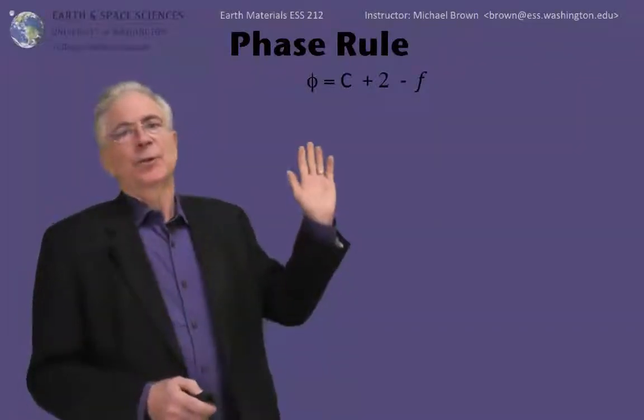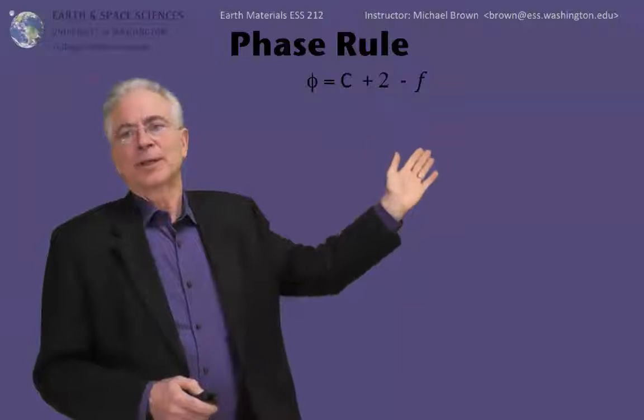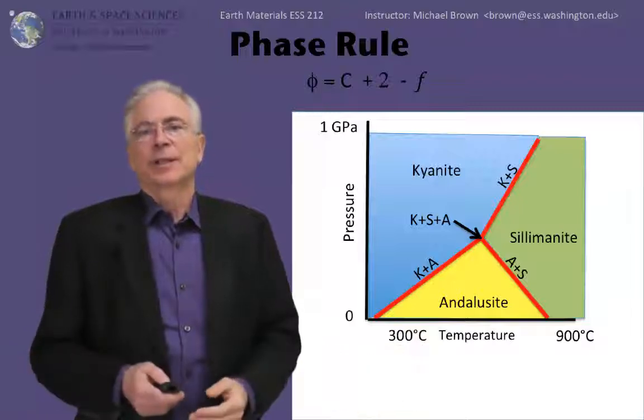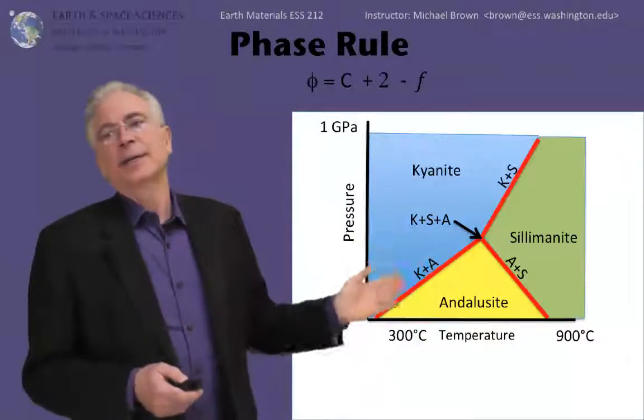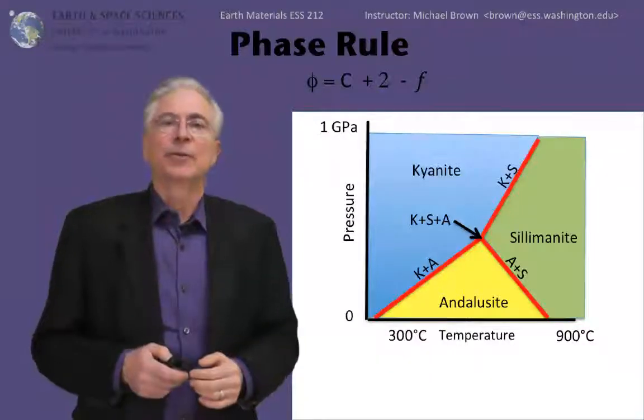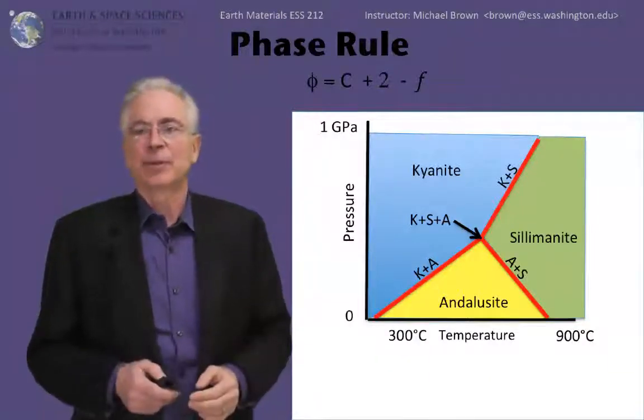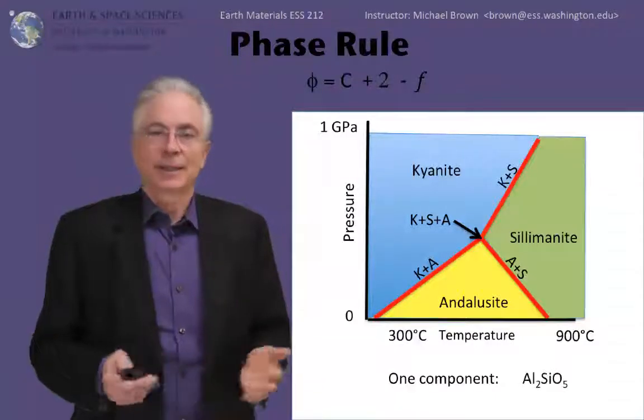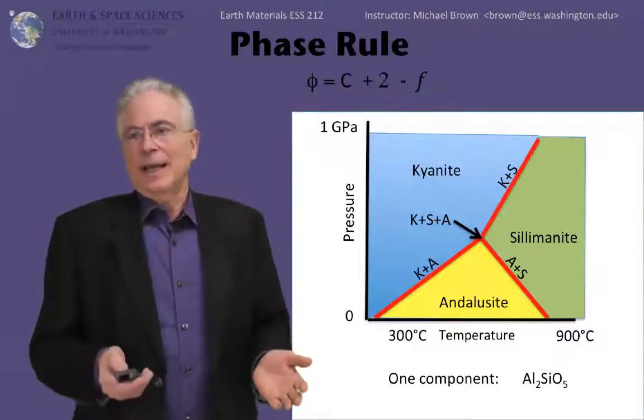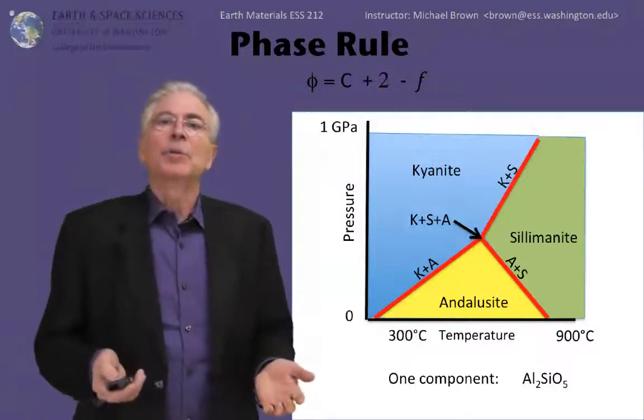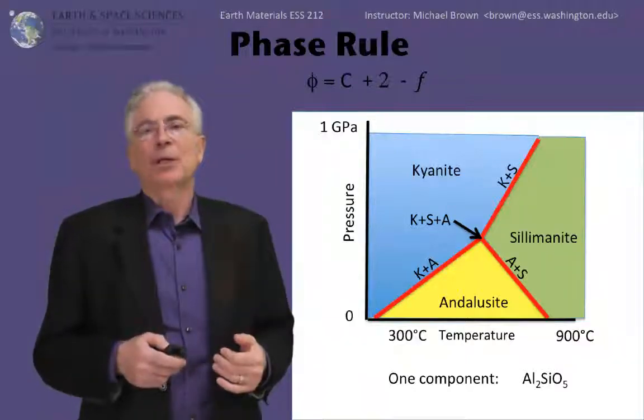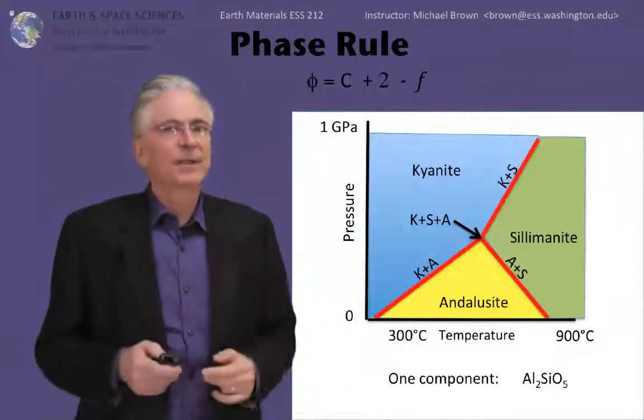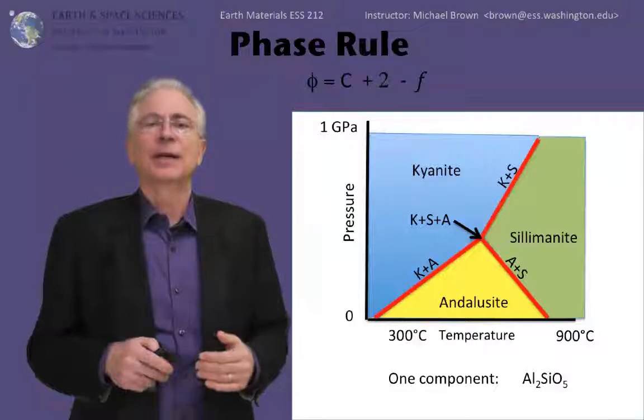You reproduce the phase rule. The number of phases equal to the number of components plus two minus degrees of freedom. Here's the aluminosilicate phase boundary. You've seen this before. Kyanite, andalusite, and sillimanite are stable in different regimes of pressure and temperature. In this case, we have a single chemical component. It's the chemical Al2SiO5, the building block of all three polymorphs. They're polymorphs. They're the same compositions. One single component that explains the chemistry of all of them.